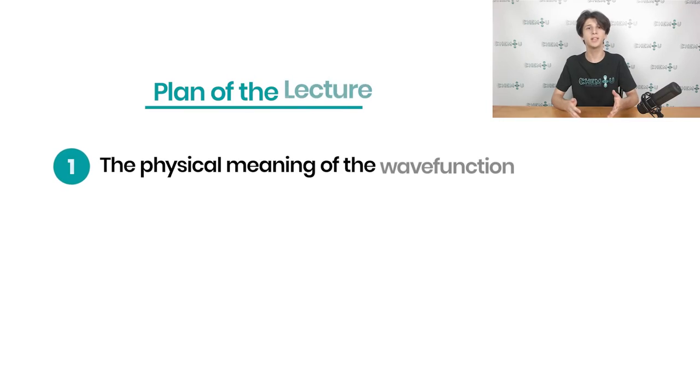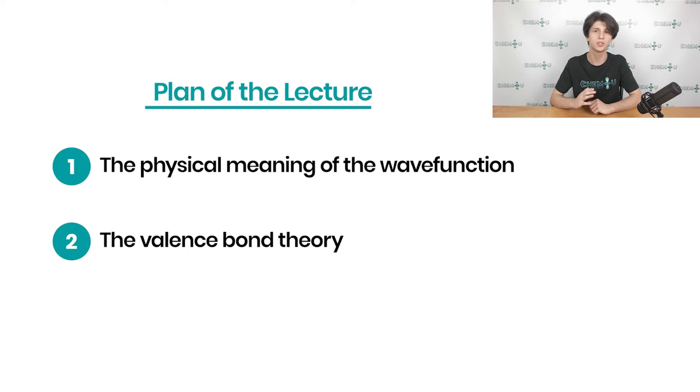Our plan for today is as follows. To begin, we will explore the Schrödinger equation in greater depth in order to understand its physical meaning. Then, utilizing our knowledge of Lewis structures and the Schrödinger equation, we will take a closer look at chemical bonding from a different perspective, specifically the valence bond theory.